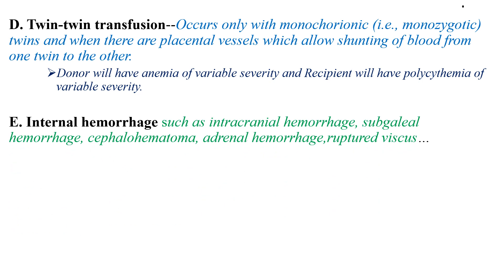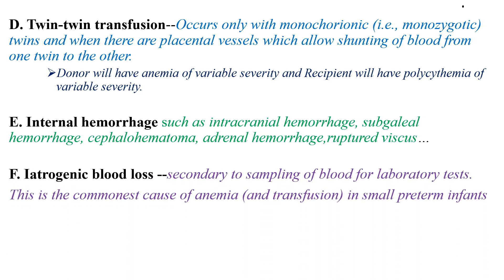Another cause of anemia is internal hemorrhage, which includes intracranial hemorrhage, subgaleal hemorrhage, cephalohematoma, intraventricular hemorrhage, adrenal hemorrhage, or ruptured viscus. The other is iatrogenic blood loss, which is secondary to sampling of blood for laboratory tests. This is a common cause of anemia in small preterm infants who stay in hospital for a long time and require frequent blood sampling for monitoring.